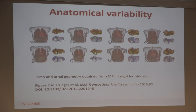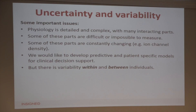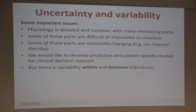There would also be some variability from one action potential to the next in a beating cardiac cell. So what are the issues? Physiology is much more detailed than many systems we look at in standard engineering — there are a lot of interacting parts, and a lot of these things are very difficult or even impossible to measure precisely.